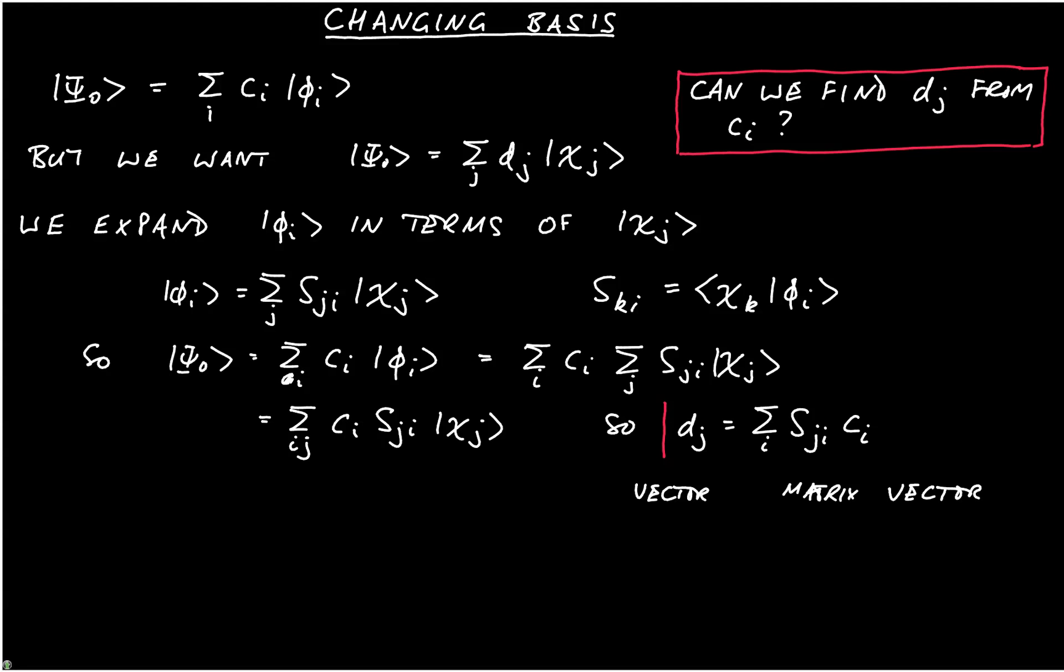So this is the important formula. And we have d_j being the coefficients of a vector, s_ji being the coefficients of a matrix, and c_i being the coefficients of another vector. I hope that presents the basic idea clearly.